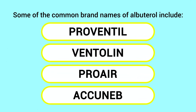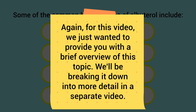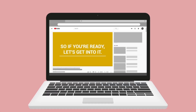Some of the common brand names of albuterol include Proventil, Ventolin, ProAir, and AccuNeb. For this video, we just wanted to provide a brief overview of this topic — we'll be breaking it down in much more detail in a separate video.